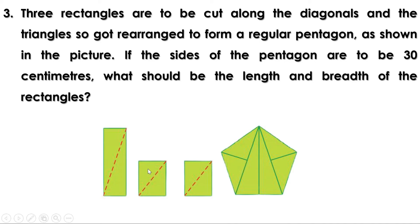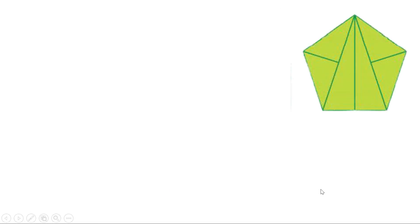Similarly, these two triangles are also equal. That means, these two triangles are equal, these two triangles are equal, and these two triangles are also equal. Now, let us take our regular pentagon and give it a name. Let it be A, B, C, D, E.